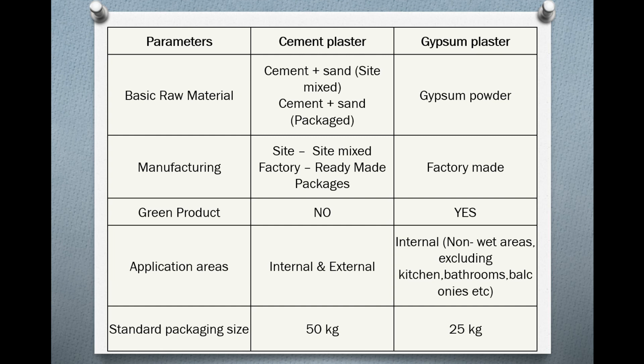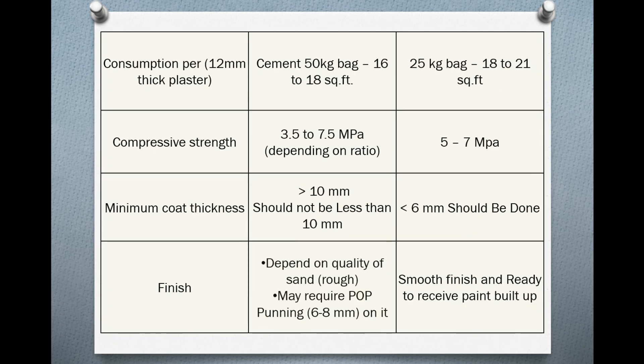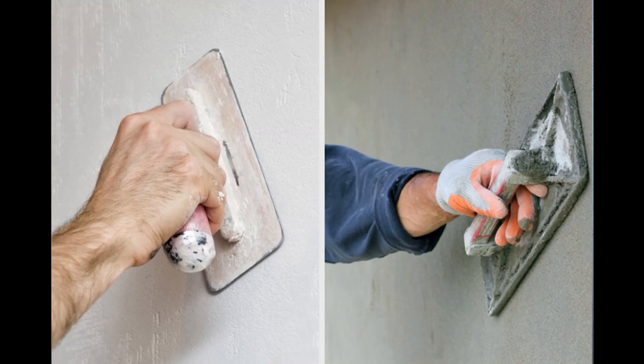Next: standard package. Cement plaster comes in 50 kg bags, while gypsum plaster comes in 25 kg bags. For coverage, 50 kg of cement plaster covers approximately 20 sq ft at 12 mm thickness. One 25 kg bag of gypsum plaster covers approximately 21 sq ft.